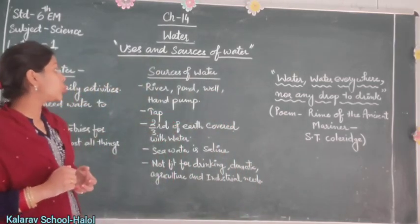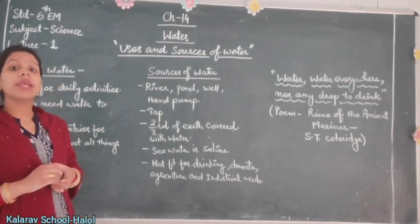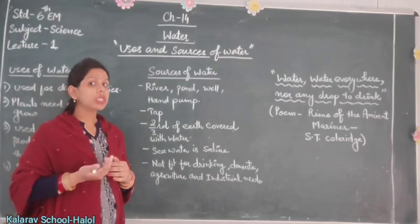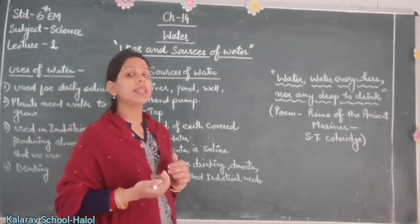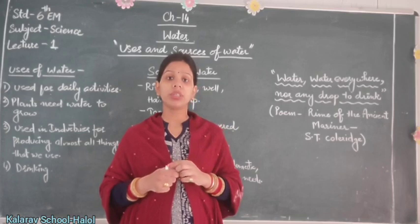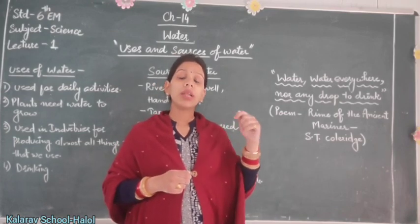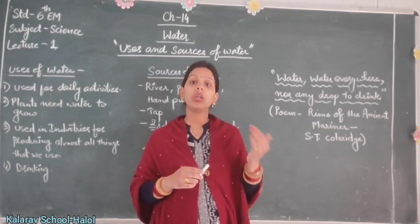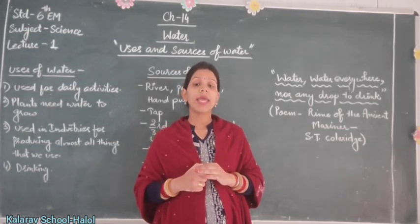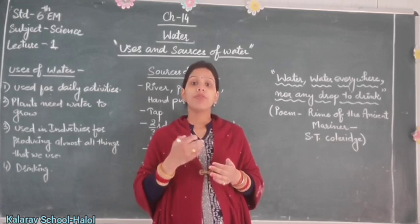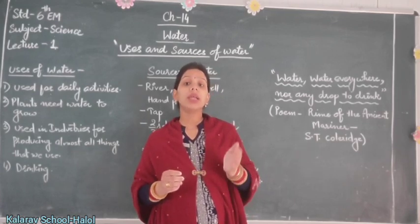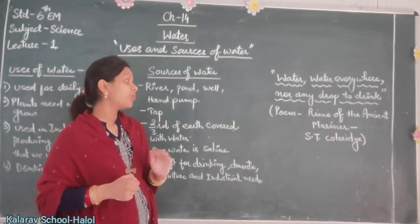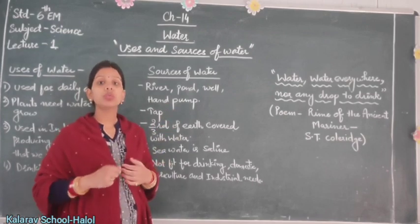Next are the sources of water. We get water from rivers, ponds, wells, and hand pumps. But the question arises — how do rivers, ponds, and wells get their water? In our houses, industries, and many other places, water comes by different means, like from taps and hand pumps. The water in our taps comes through pipes connected to hand pumps or water sources.